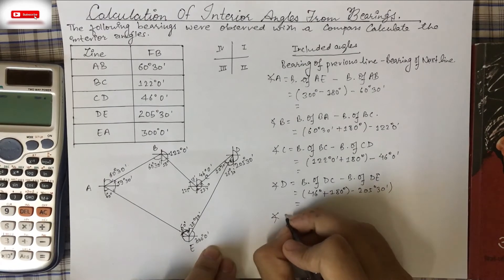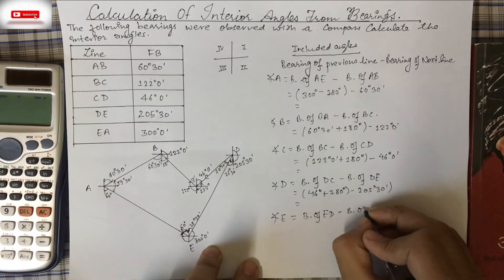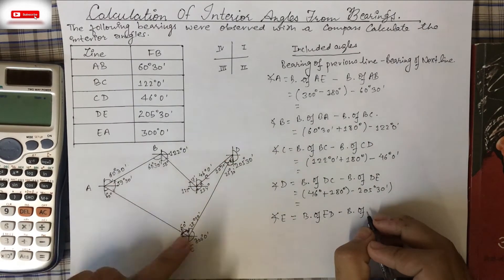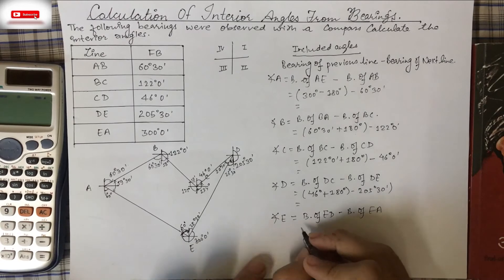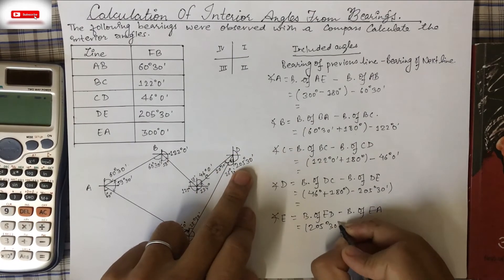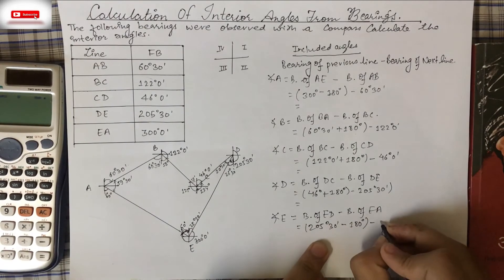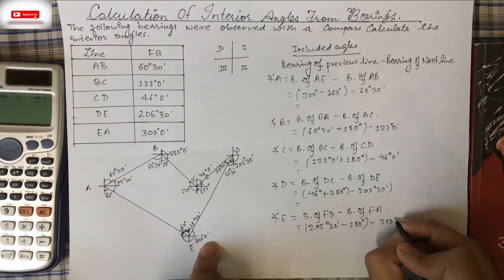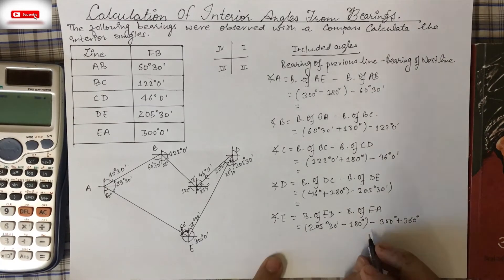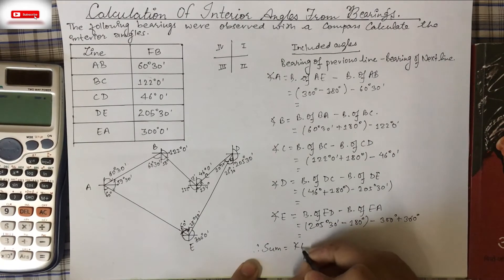For angle E: bearing of ED minus bearing of EA. Since 205°30' > 180°, we subtract 180°, giving 25°30'. Then minus 300°, which requires adding 360° to keep it positive. So: (205°30' − 180°) − 300° + 360°.